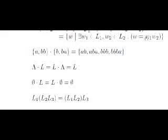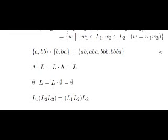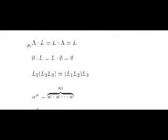Let's see an example of concatenation. When concatenating two finite languages, we obtain a language with as many words as the product of the number of words of the first language by the number of words of the second language. It can be easily checked that the language containing only the empty word is the identity element for the concatenation of languages.